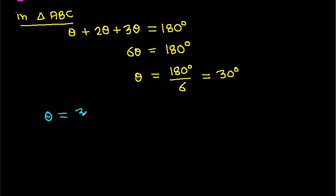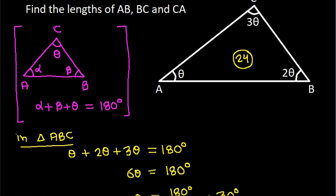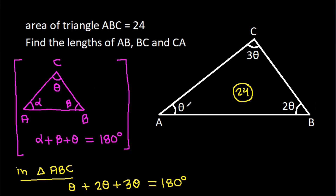So theta equals 180 divided by 6, that is 30 degrees. We get theta is 30 degrees, 2 theta is 60 degrees, and 3 theta is 90 degrees.